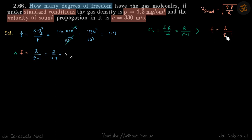So we need gamma to find degree of freedom, and gamma is here. Velocity of sound is given to us, pressure is given to us because of standard conditions, and rho is also given to us. So we'll just find gamma, put it here, and get our answer.